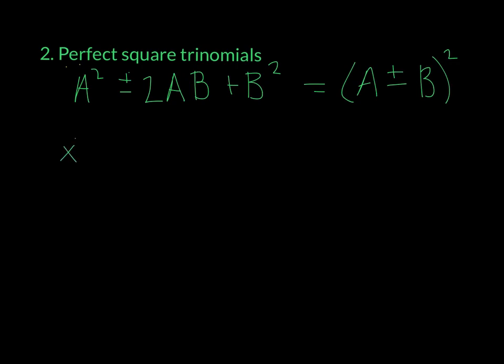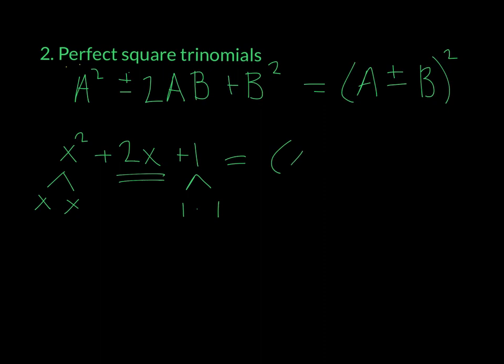So if I have x squared plus 2x plus 1, you have to determine if it's a perfect square trinomial by thinking about the square root of x squared and the square root of 1. We have x times x and 1 times 1. If you take those, multiply 1 times 1 and add the 2, you get the middle term — so it is a perfect square trinomial, giving you x plus 1, squared.